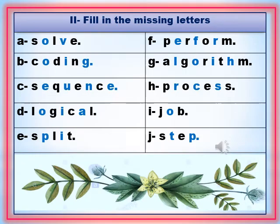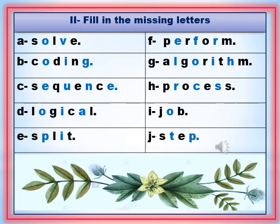Now move on to question number 2 on page number 29: fill in the missing letters. Dear students, read the word carefully, fill the missing letters properly and make the word correctly. A: O and V are the missing letters and the correct word is solve. B: O, I, G are the missing letters and the correct word is coding. C: E, U, N, E are the missing letters and the correct word is sequence. D: O, I, A are the missing letters and the correct word is logical. E: P and I are the missing letters and the correct word is split.